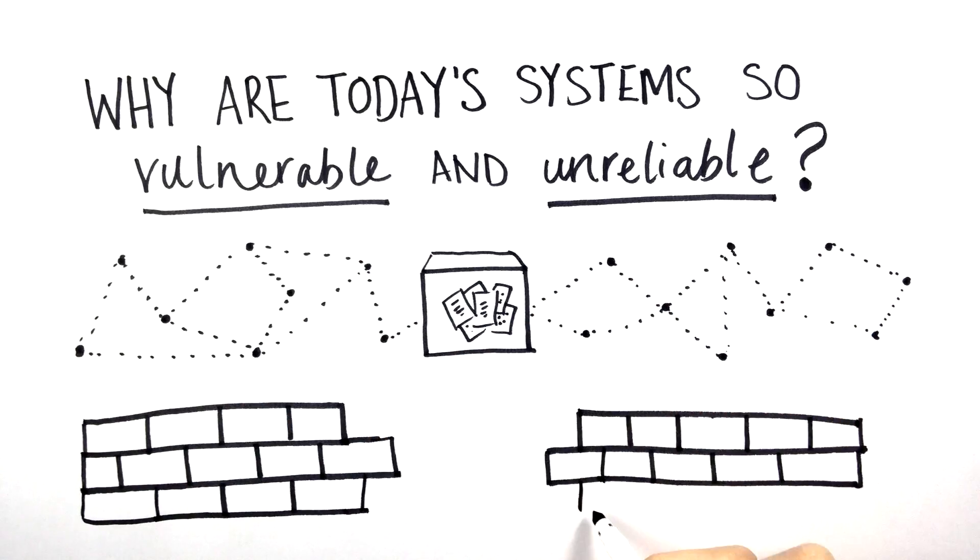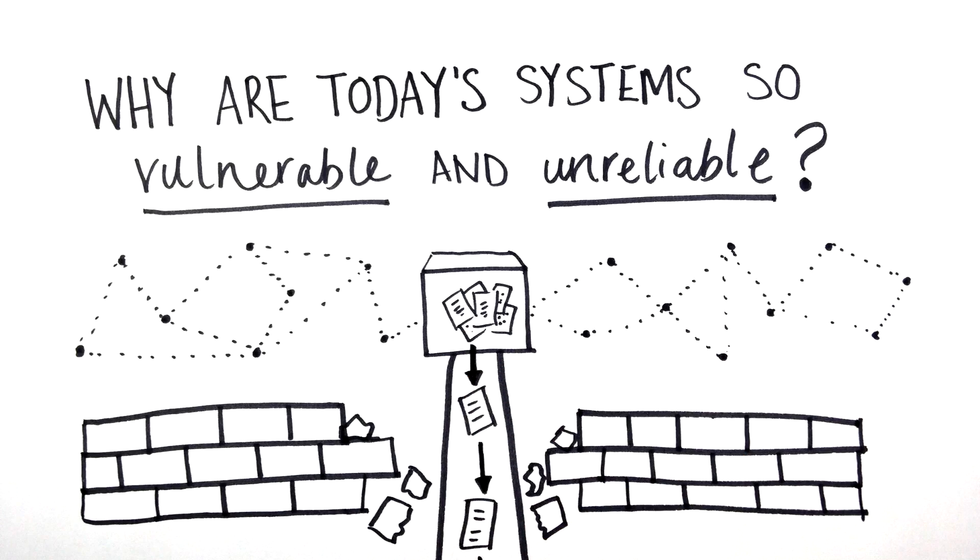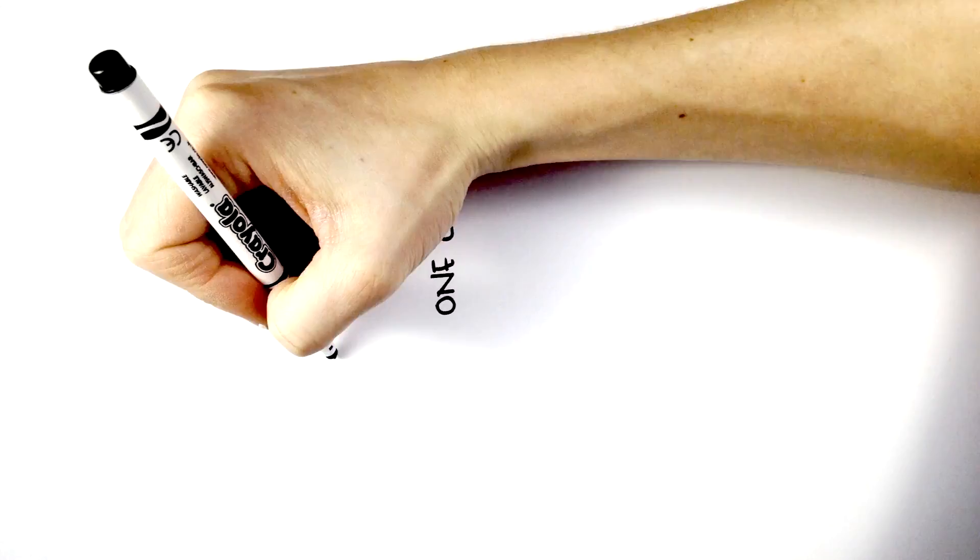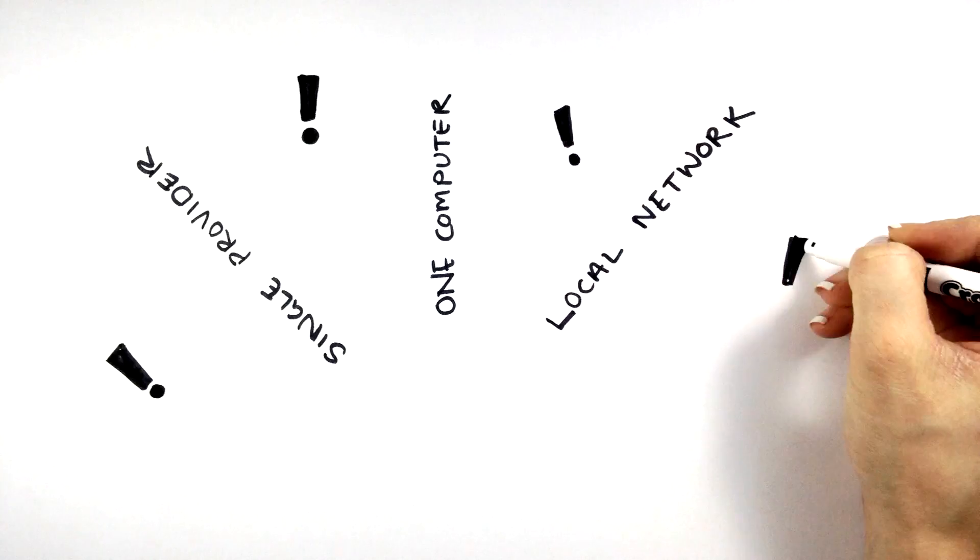If the walls of system security are penetrated, the data is ripe for the picking. Even if the data has been encrypted, if it is all in one computer, a single provider or a local network, it can still be stolen or erased.